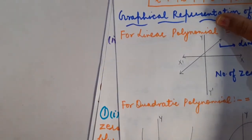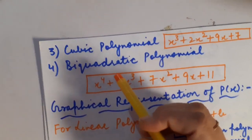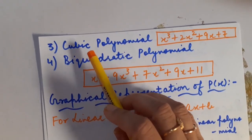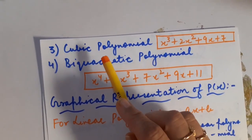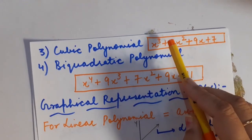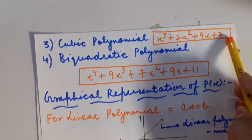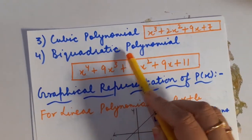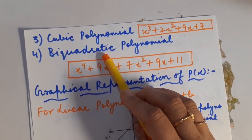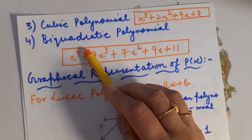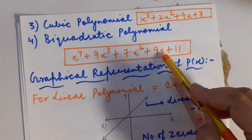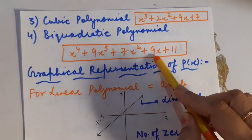Now, we are going to switch to cubic polynomial. Cubic means 3, so the highest power of the variable must be 3. The example is x³ + 2x² + 9x + 7. Next is bi-quadratic polynomial — bi-quadratic means the highest power will be 4. The example is x⁴ + 9x³ + 7x² + 9x + 11. So this is a bi-quadratic polynomial.